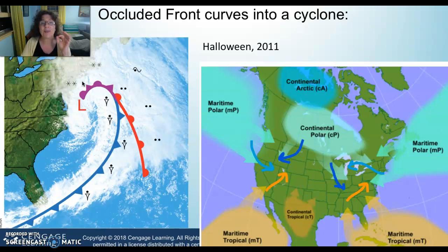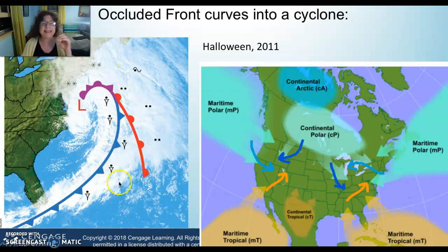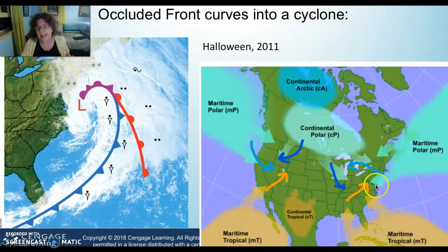This is the Halloween 2011 storm — really memorable. A perfect comma cloud right here. The warm front is out here, and here's the warm sector that fueled the top of this storm and kept the convection going for 10 inches of snow. There's the snow right in here. When you see a cyclone, the northwest quadrant will always get the most precipitation. You can see how these air masses form out to create a cyclone.